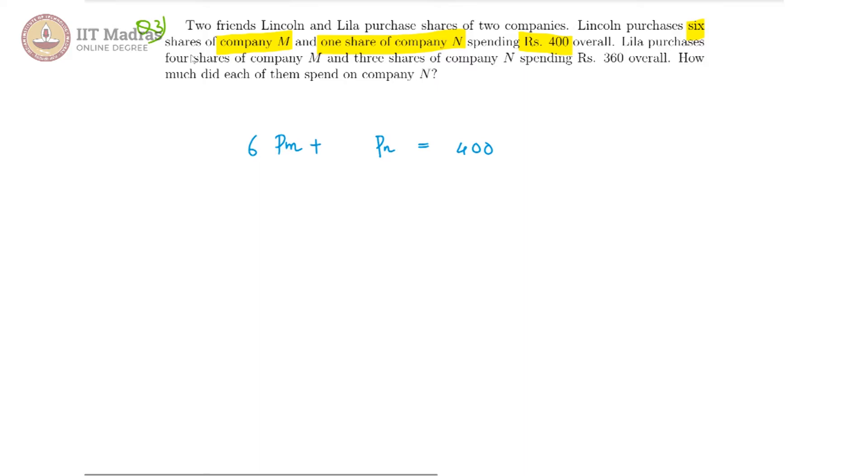Then for Leela, there are four shares of company M and three shares of company N coming to 360. So for Leela, we have 4 PM plus 3 PN is equal to 360.